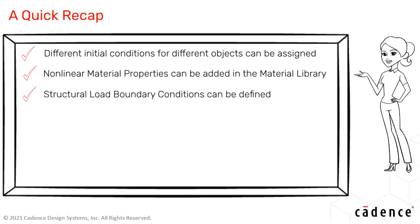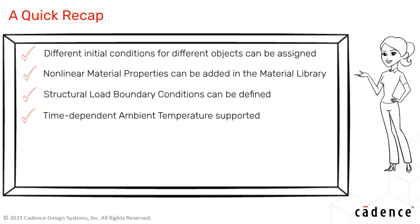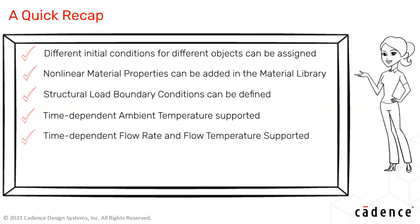Celsius lets you perform structural load analysis by specifying nodal and surface loads as boundary conditions, helping you study the effect of different loads on the deformation of materials. For transient analysis, you can define time-dependent ambient temperature instead of a constant value. Celsius also lets you define time-dependent flow rate and flow temperature for an opening on the chassis wall, helping you model more realistic scenarios where inlet flow rate and temperature can vary with time.